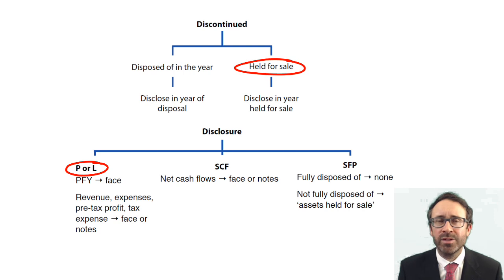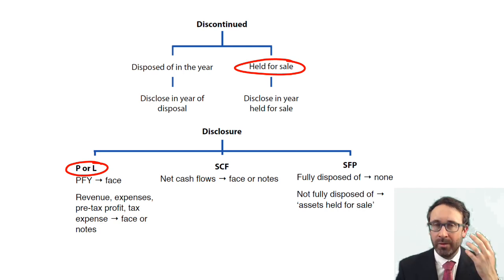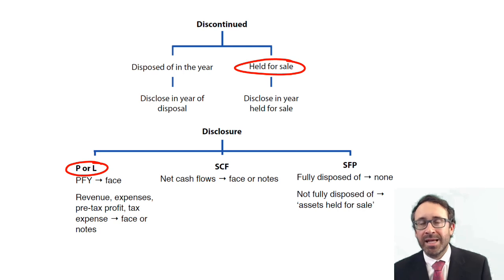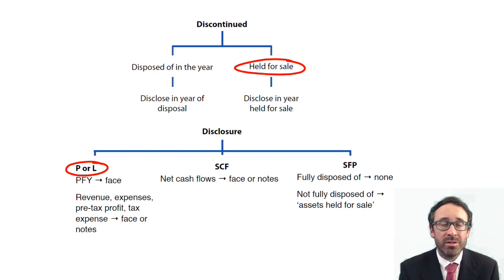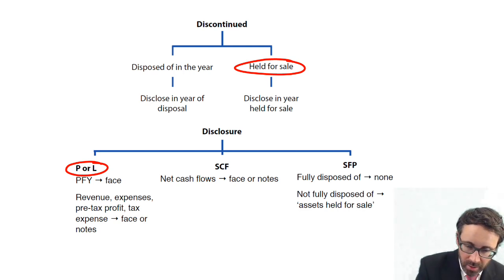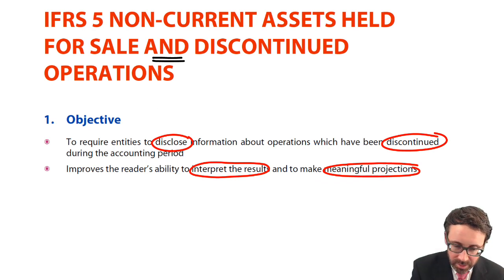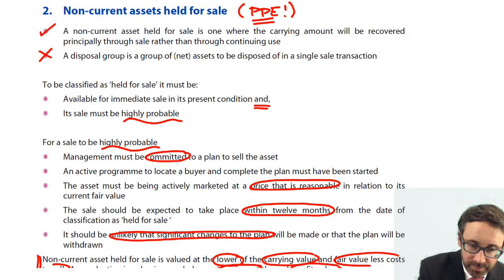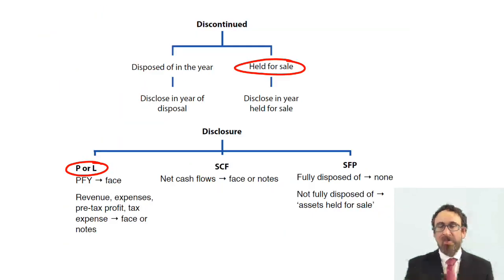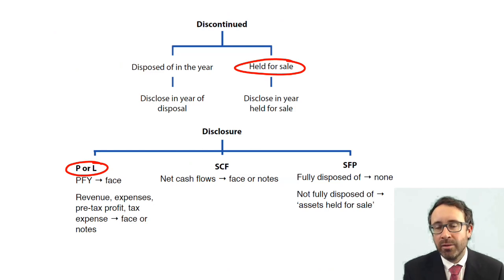For cash flows, you can separate out the cash flows from continuing and discontinued operations — again, you have a choice of the face or the notes. On the statement of financial position, if it's fully disposed everything's gone so there's nothing to show. But if it's held for sale, then you would show those assets as being held for sale. Since it's a line of business or geographical area, there are going to be lots of assets and lots of liabilities — which brings it back to the idea of a disposal group. So you've got this single coordinated plan to dispose of a separate line of business or geographical area, and you would show the assets and liabilities separately as being held for sale.